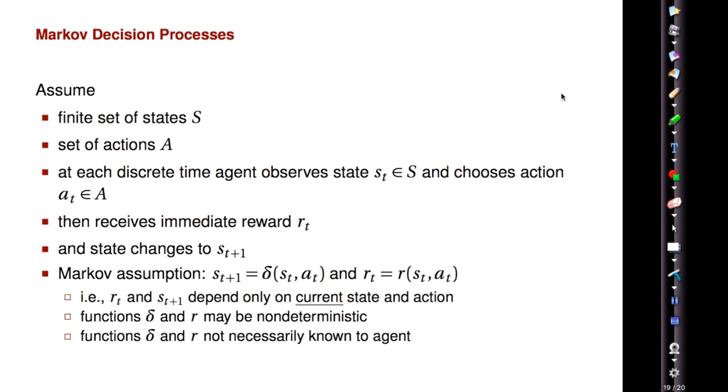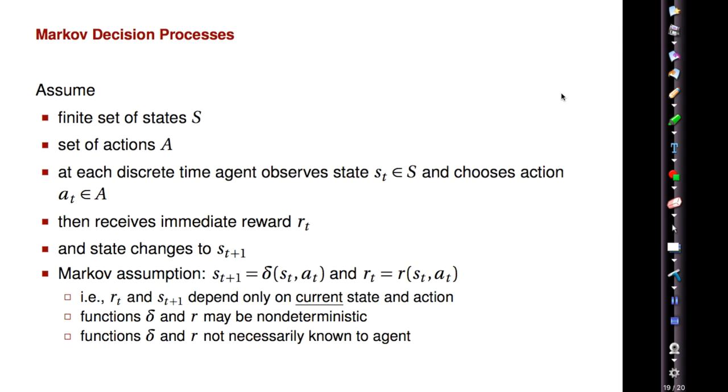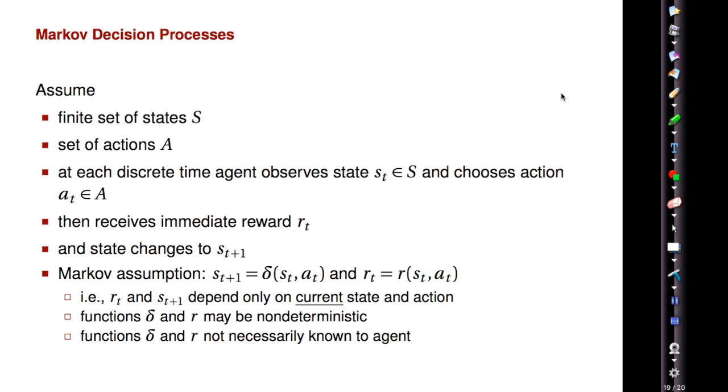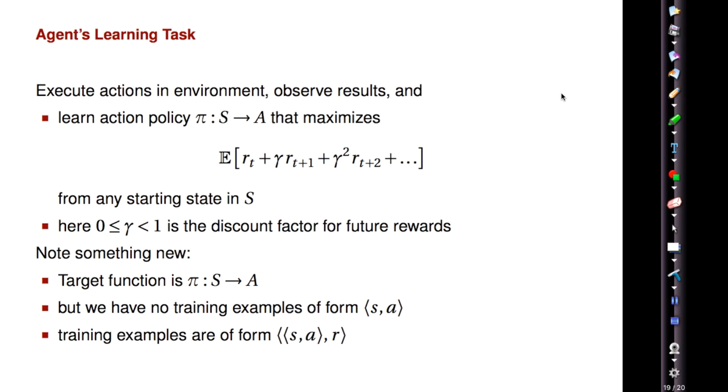One formalization of the reinforcement learning problem is as a Markov decision process. And so this says that there are a finite number of states in the world. This is a limiting assumption, but it proves to be fairly general. And you have some set of actions A that the agent can take. When the agent makes some action, it gets a reward. And then the agent receives the new state that it's in. It's called a Markov decision process because the state is assumed to only depend on the current state and the action that the agent takes. And the same is also true of the reward. But the agent may not know the exact state that it's in, and these transitions from state to state could be non-deterministic. They just don't depend on a long history of previous states.